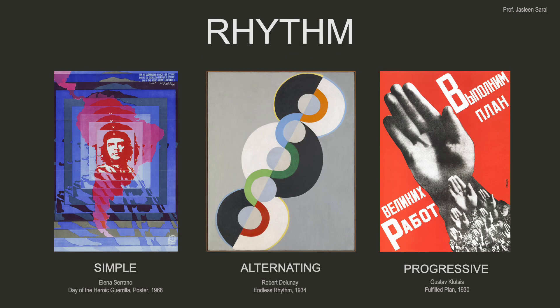The next thing we're going to look at is rhythm, which I've divided into three different parts. Rhythm is similar to music — you have silence and sound, and the way they repeat creates a rhythm. Here we have simple rhythms where the outline of a poster is repeated over and over at the same distance, not getting bigger or smaller. It's quite simple, similar to the patterns shown earlier.